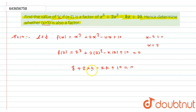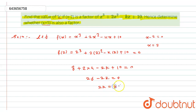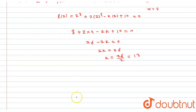So 2 into 4 is 8; 8 plus 8 is 16, and 16 plus 10 is 26. Therefore 26 minus 2k equals 0, giving 2k equals 26, and thus k equals 26 divided by 2, which is 13.